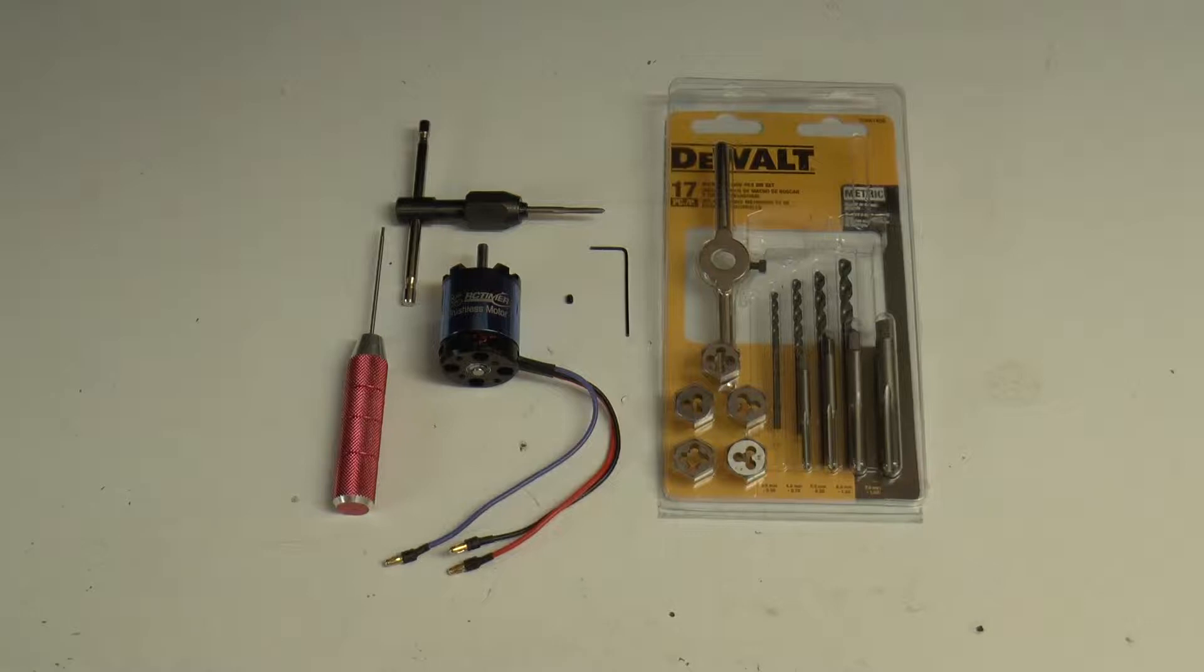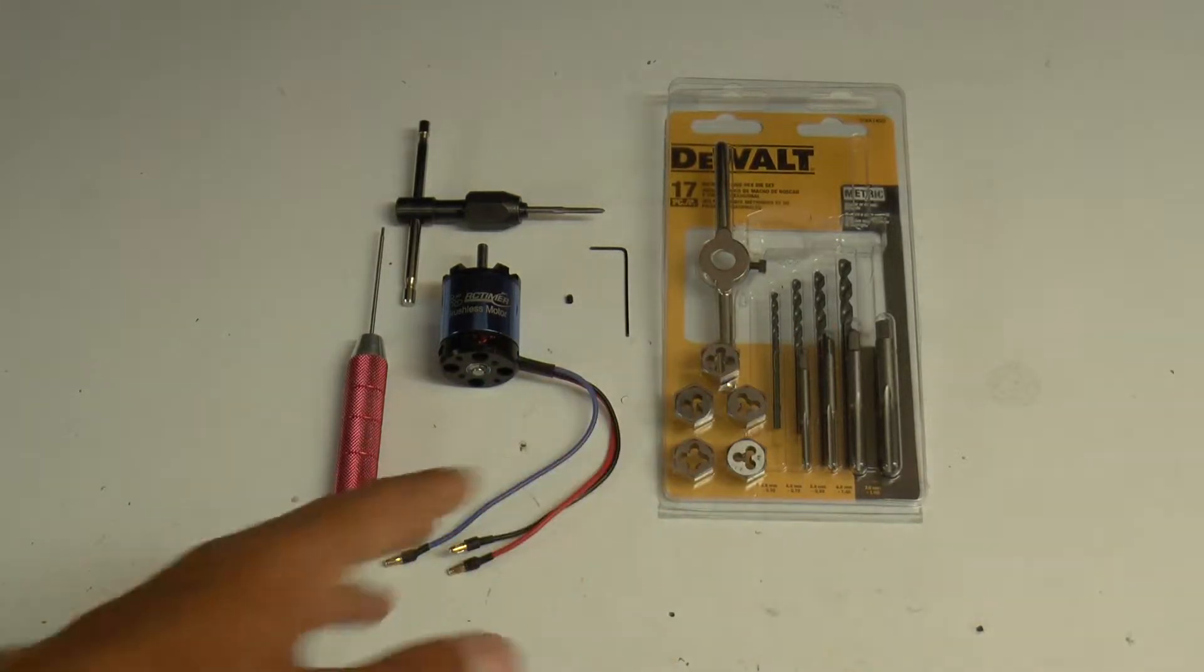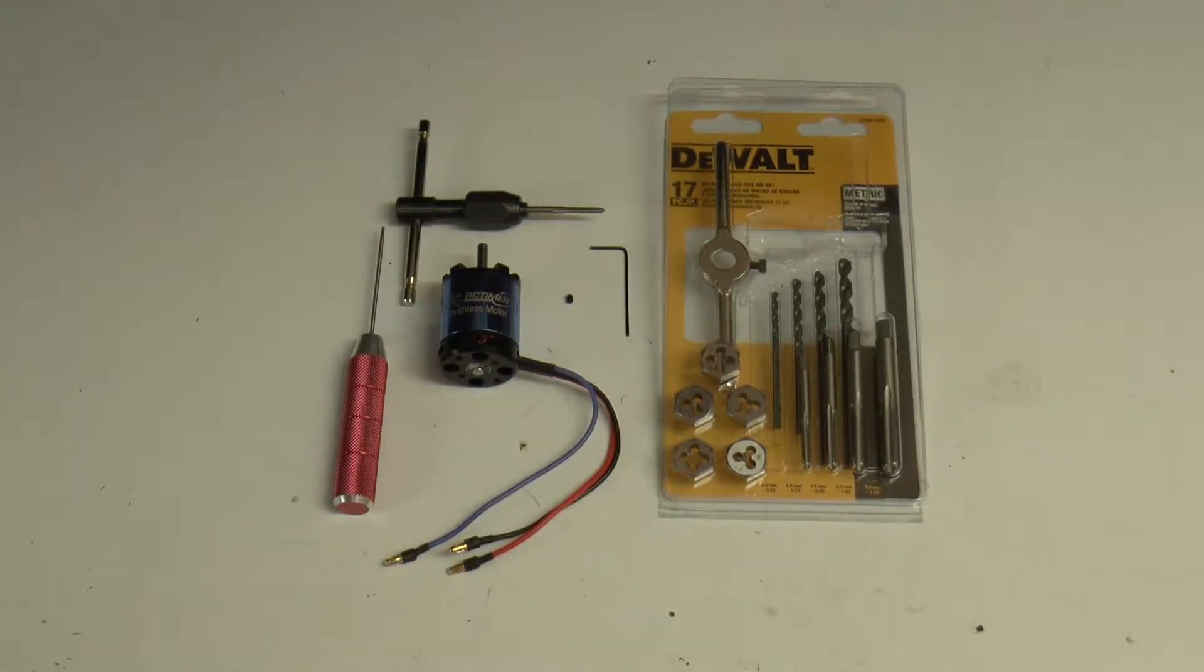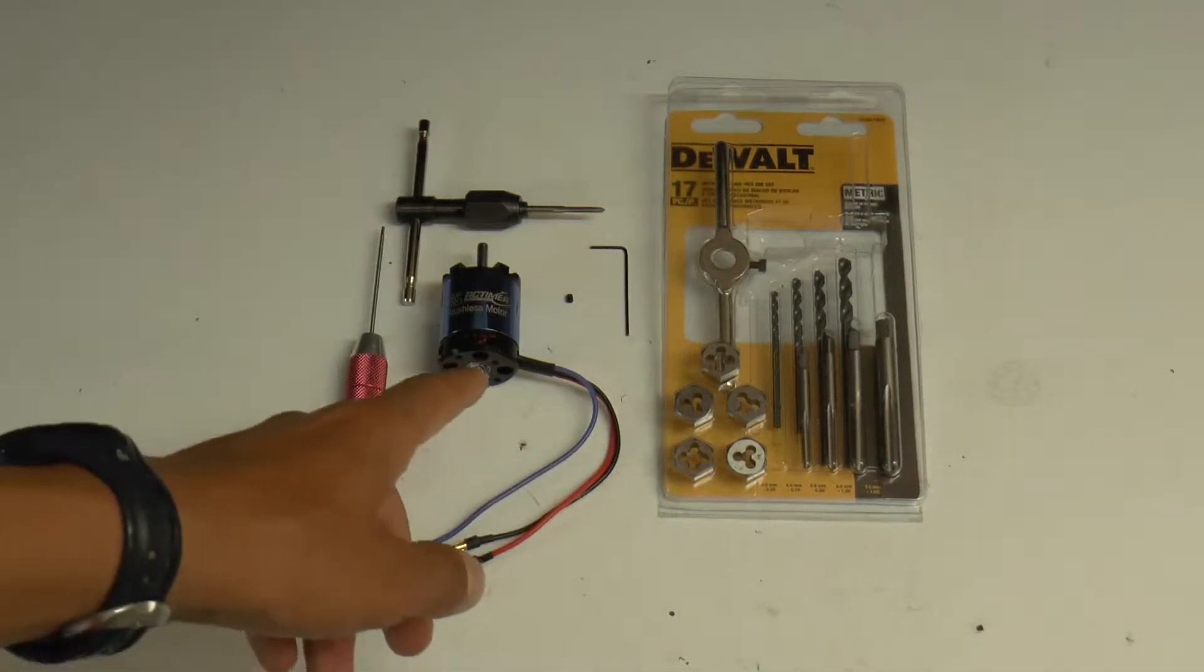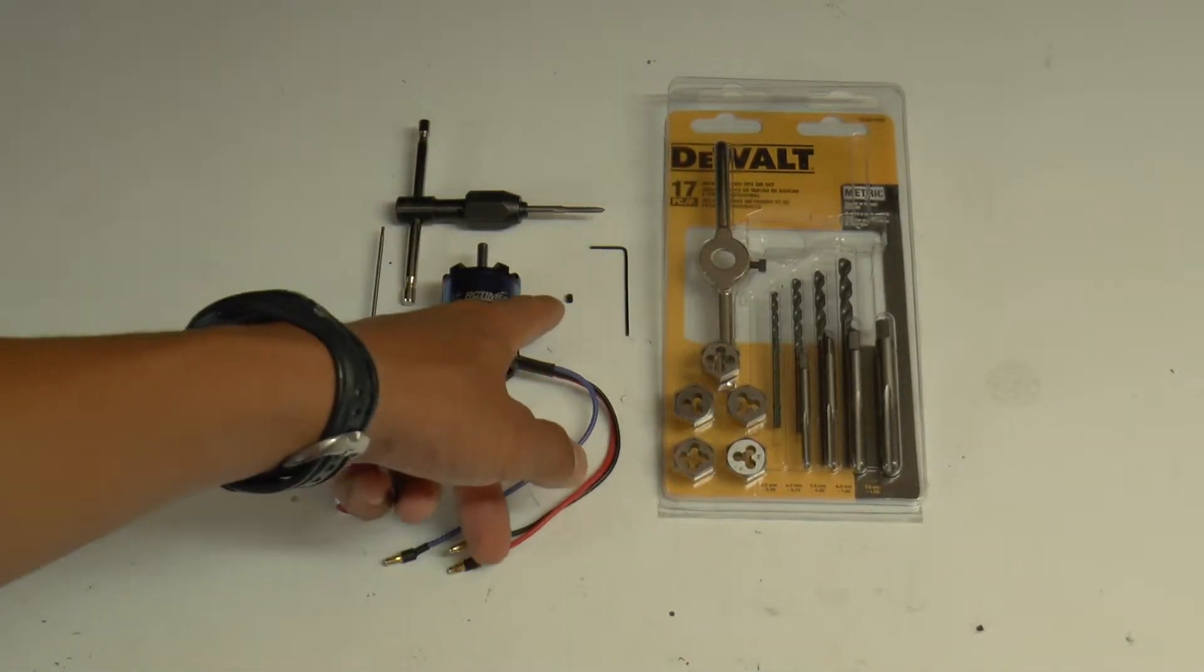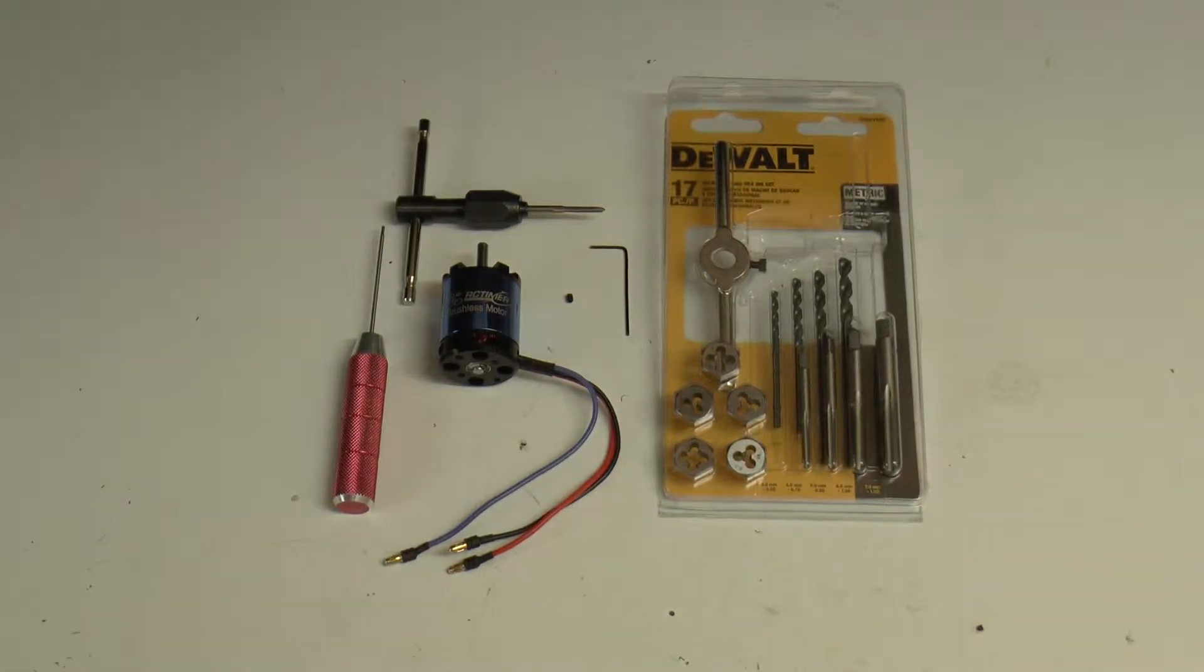So he recommended that I go out and buy a kit like this. This is a tap and die kit, and he said that I need to get the metric one so I can put in a 3mm grub screw, set screw, whatever you call it, which is what that is right there.